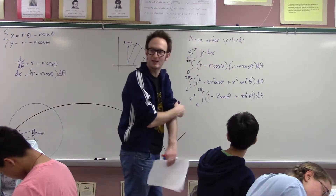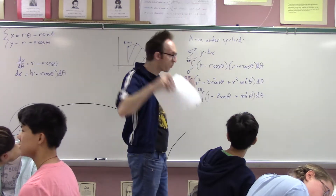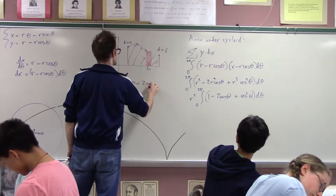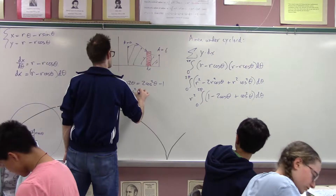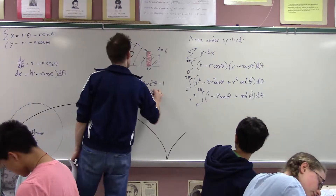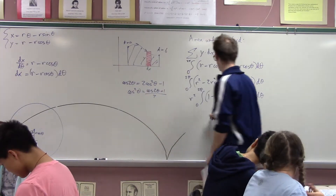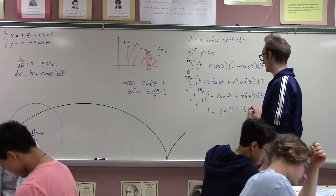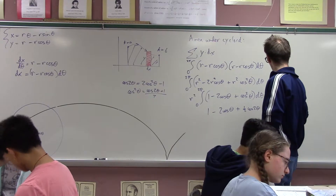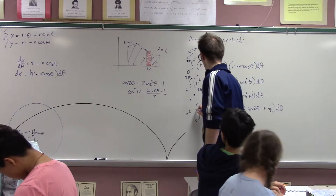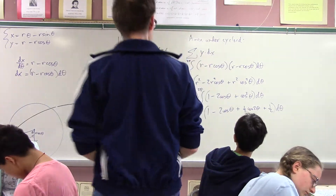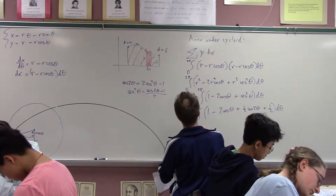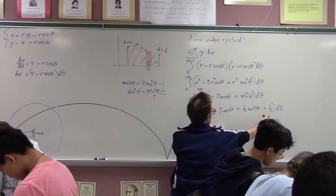About 60 percent of you know exactly what to do with cos²(theta) — you use the cosine double angle identity: cos(2θ) equals 2·cos²(θ) minus 1, and solving for cos²(θ) gives (cos(2θ) plus 1) over 2. So the integrand becomes r² times the integral of 1 minus 2·cos(θ) plus (1/2)·cos(2θ) plus 1/2, from zero to two pi.